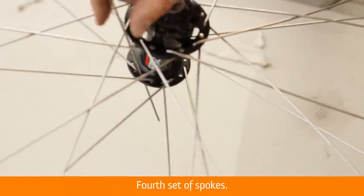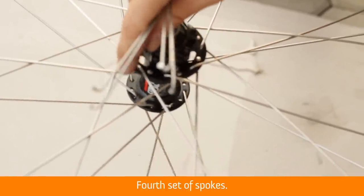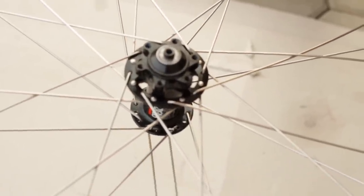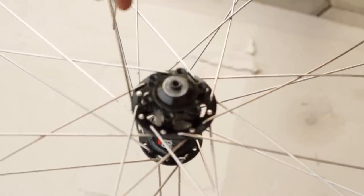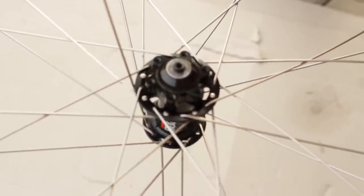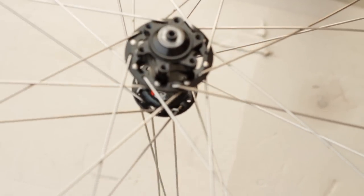Fourth and final set of spokes. Drop spokes down through the remaining hub holes in the bottom flange from the inside out. On a rear or front disc brake hub, these are again the longer spokes.